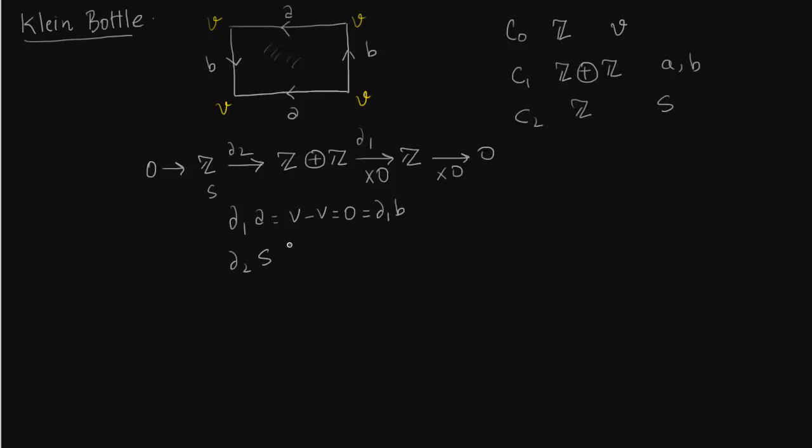Now delta 2 is slightly more interesting. We first have to draw the orientation anti-clockwise. Start at the bottom of the figure. A is in the opposite direction compared to the anti-clockwise. B is in the same direction. Top A is in the same direction and then B on the left is in the same direction. What we get is 2B. So this map is an injective map, multiplication by 2, image is 2Z and kernel is 0.